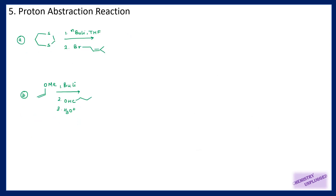The next property is proton abstraction. Proton abstraction means when I am using an organolithium compound, this compound can act as a base. We have seen its properties as a nucleophile, but it can also act as a base. When it is acting as a base and removing a proton, that proton should be acidic in nature. So we should know what type of proton can be acidic — I will give you a brief summary.